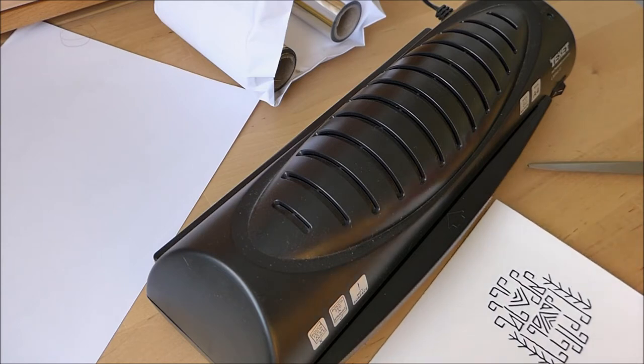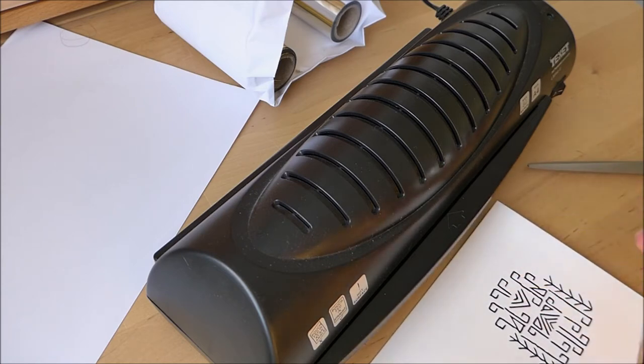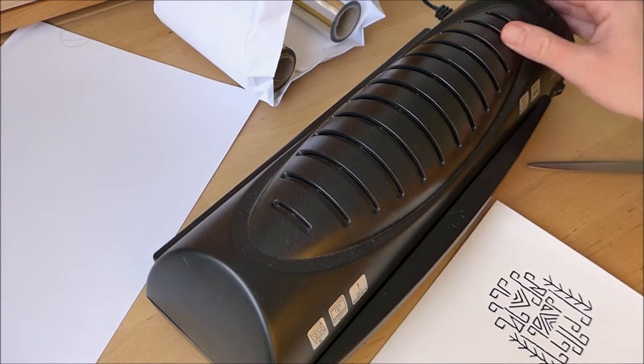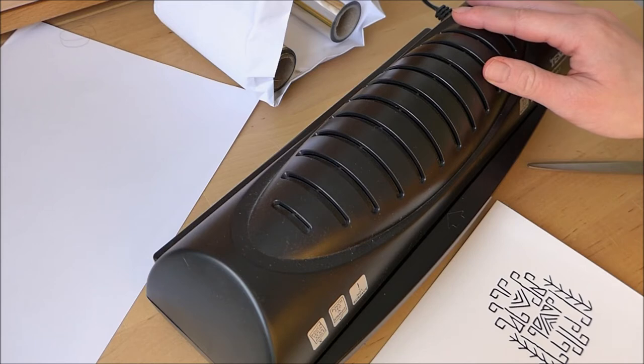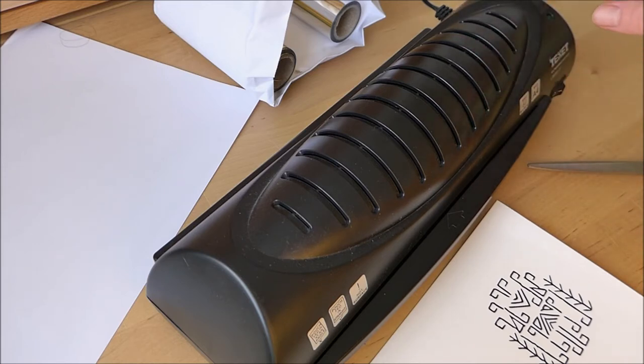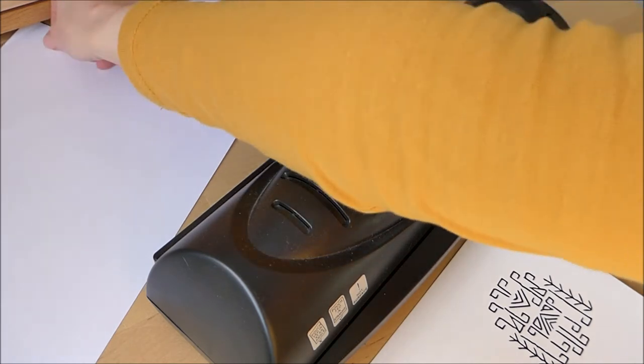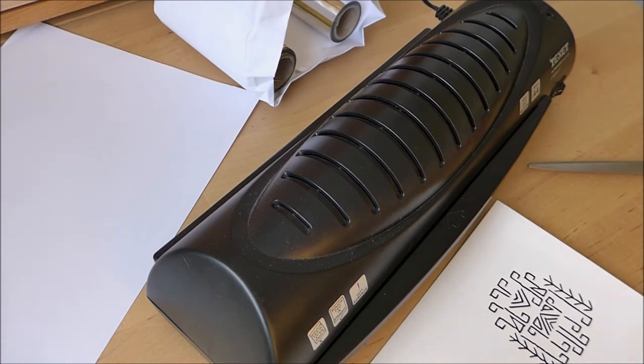So you know how you see really nice shiny designs on things? Well this is one technique that we are supposed to be able to do it with. Now usually foiling is done by heat transfer, so in theory we should be able to run it through a laminator because a laminator heats up in order to laminate the sheets, but we can run the paper through it as long as we protect it with another piece of paper.